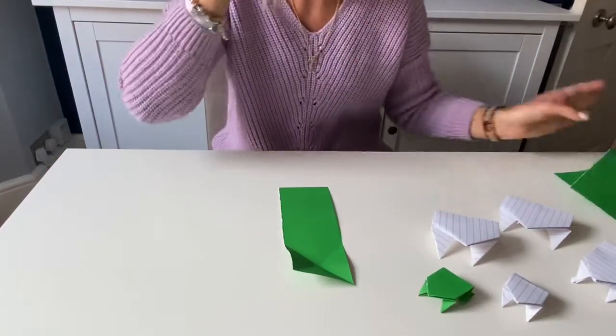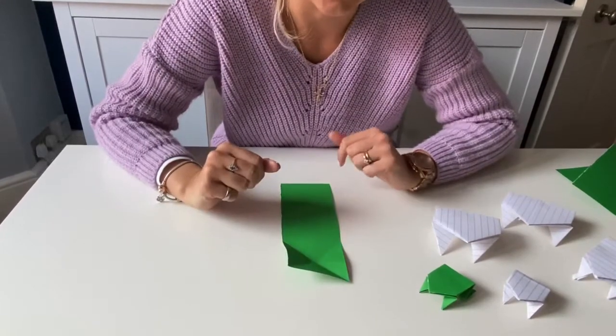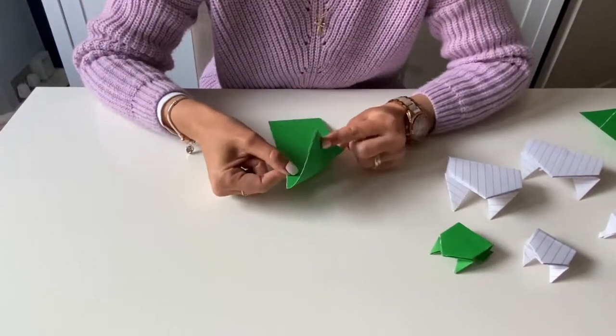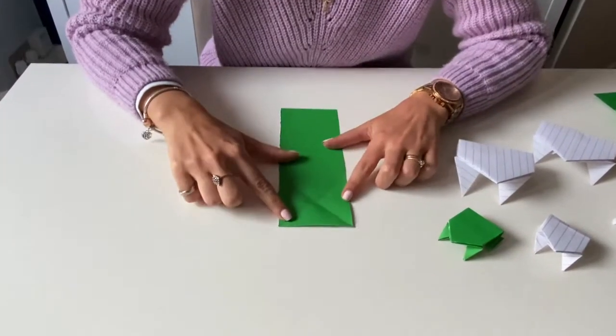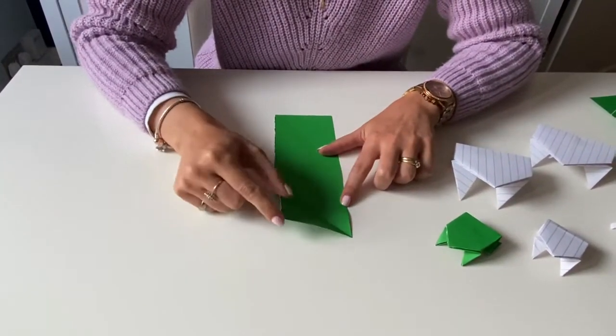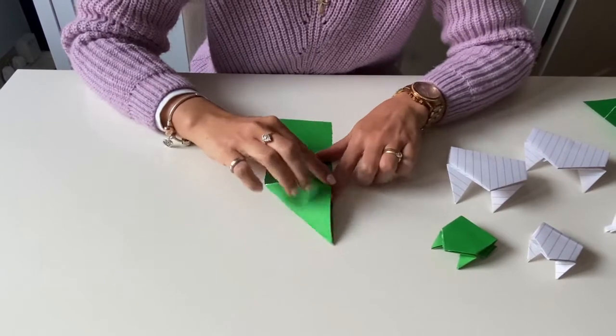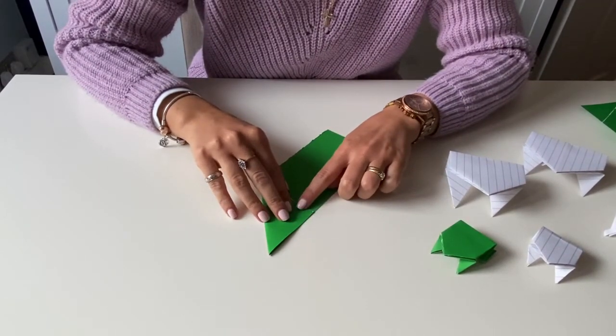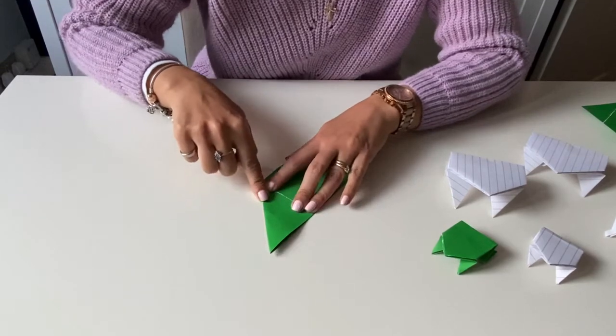All right, once you have this nice long piece of paper we're going to get started on making a frog. Now I have already cheated because I've already started, but I'm going to show you step by step. So first step, you're going to take a corner, you're going to fold your edge of your paper to that edge of the paper, nice and neatly, and you're going to squish it down tight.